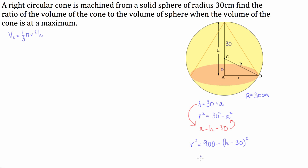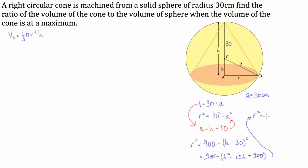What we're left with is 900 minus, keeping the bracket, H squared take 60H plus 900. The 900s cancel, and we're left with r squared being equal to negative H squared plus 60H.